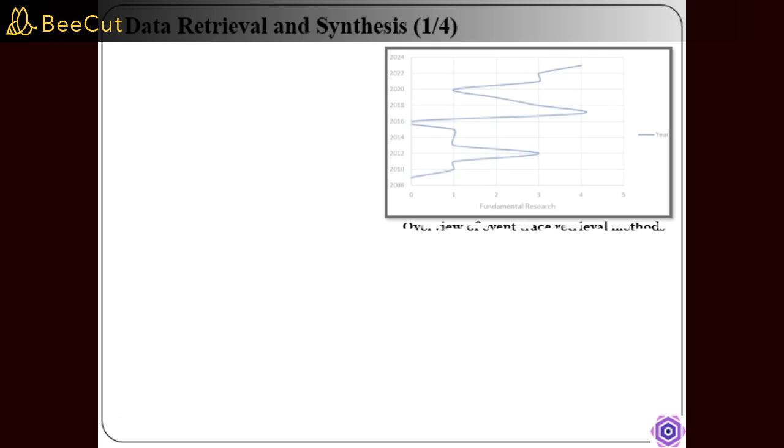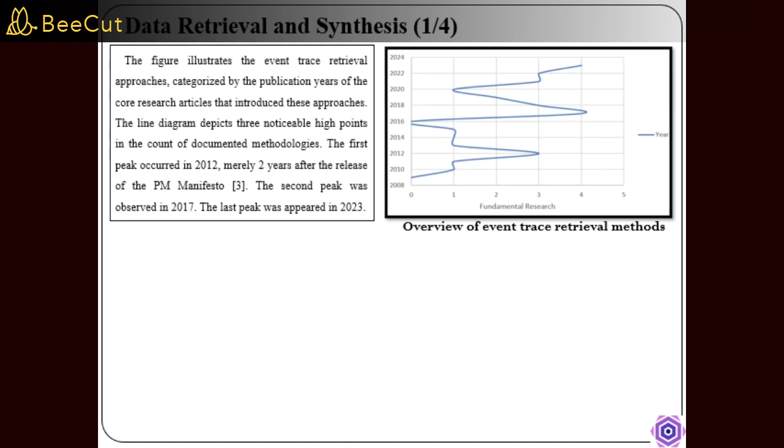The figure shows event trace retrieval approaches categorized by publication years of core research articles. Three significant peaks stand out in the count of documented methodologies: in 2012, shortly after the PM Manifesto was released, in 2017, and in 2023.